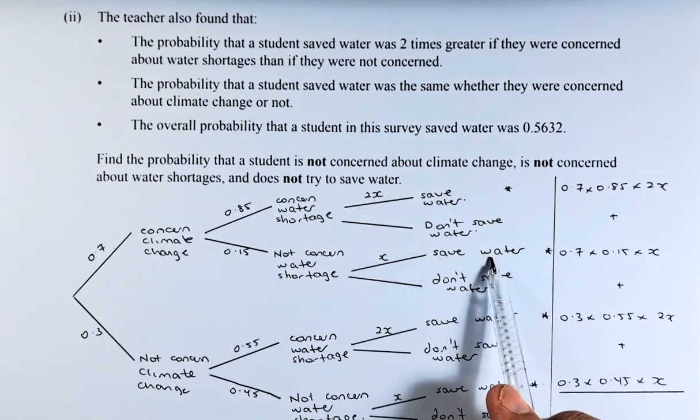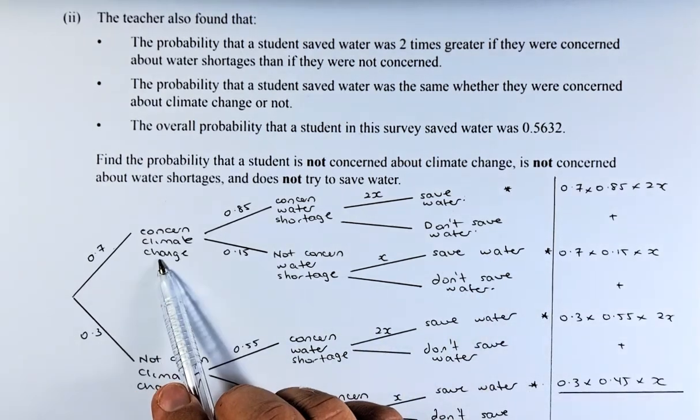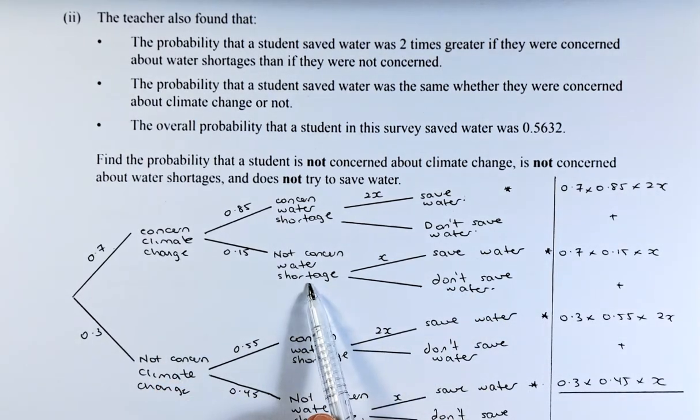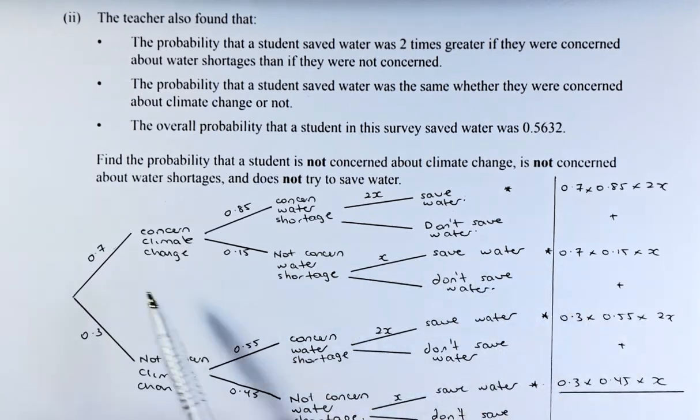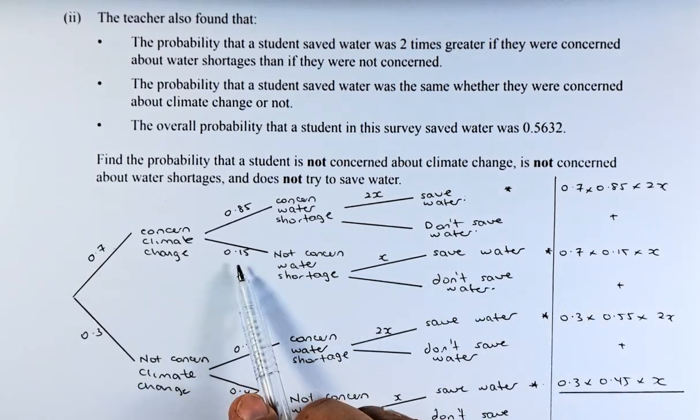Similarly, if they want to save water here, they are concerned about climate change, not concerned about water shortages and they saved water, the probability is 0.7 times 0.15 times x.